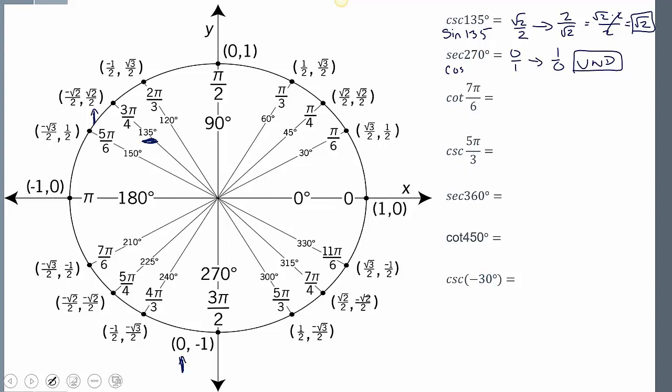Cotangent. Well, tangent is sine over cosine, or y over x at 7 pi 6. But cotangent is the reciprocal. So I do have negative 1 over 2 over negative root 3 over 2, right? That's the tangent. If I simplify that, that just becomes 1 over root 3. But it's cotangent, so I do the reciprocal of it. So this is going to flip, and I'm going to just get root 3.